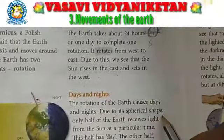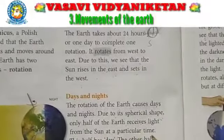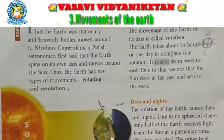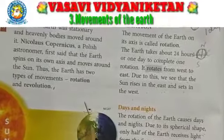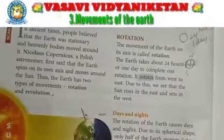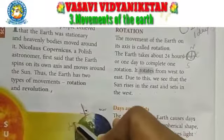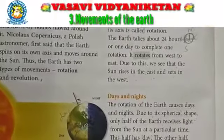Due to its spherical shape, only half of the earth receives light from the sun at a particular time. The half facing the sun has day, and the other half which is turned away from the sun is in darkness and has night.